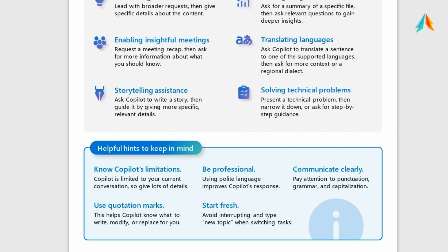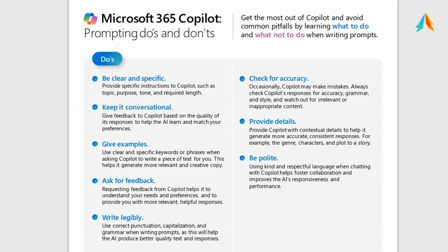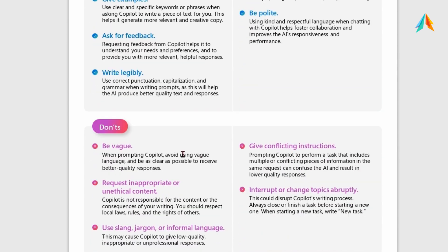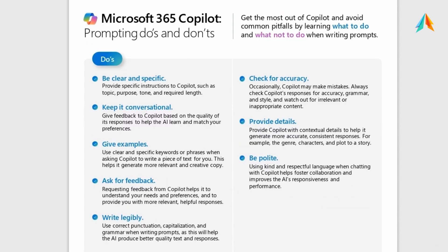Now let's talk about some important do's and don'ts. Do's: be clear and specific, keep it conversational, give examples, ask for feedback, write strategically, check for accuracy, provide details, and be polite. Copilot is also learning from us, so make sure you give feedback and check for accuracy every time you get a response. Don'ts: don't be vague, do not request inappropriate or unethical content, don't use slang, jargon, or informal language, do not give conflicting instructions, and do not interrupt or change direction abruptly. It is a learning journey for both Copilot and the human.